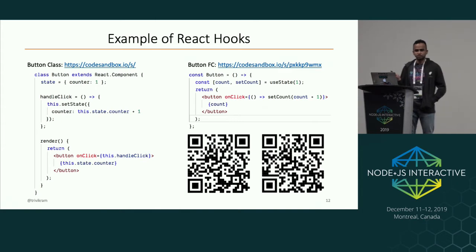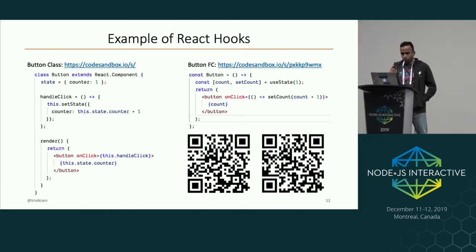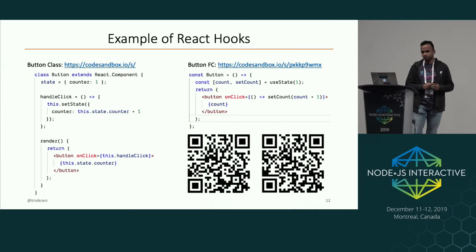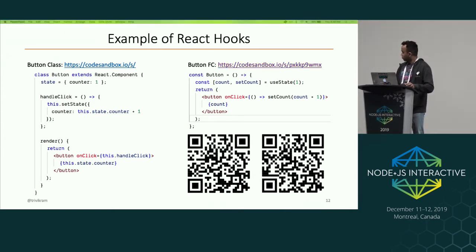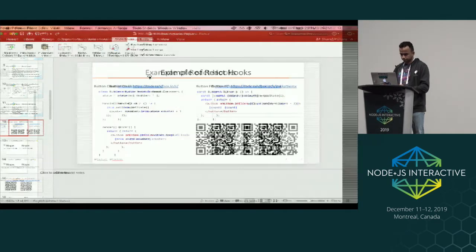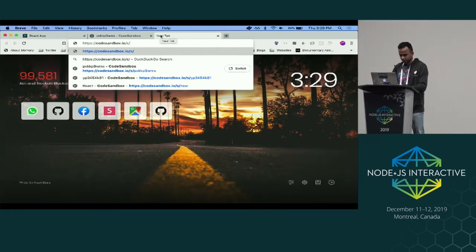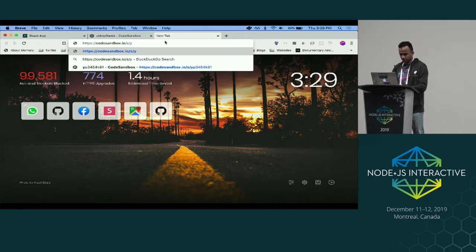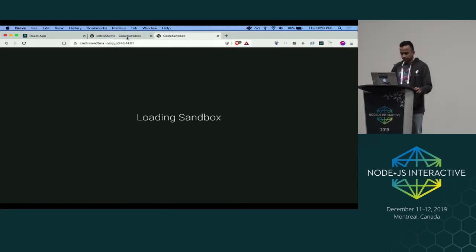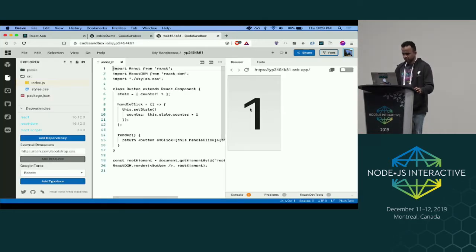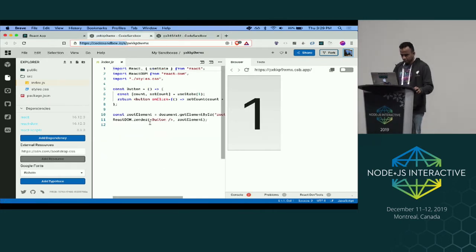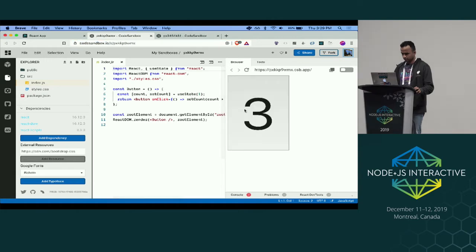This is how React Hooks changes the code. You no longer have a class — there is a function instead. You no longer call 'this.setState'. You get 'count' and 'setCount' from useState, which initializes it to one. The button's onClick just calls setCount. In the demo: the class version clicks to increase the counter, and the hooks version with just count and setCount also increases the counter.